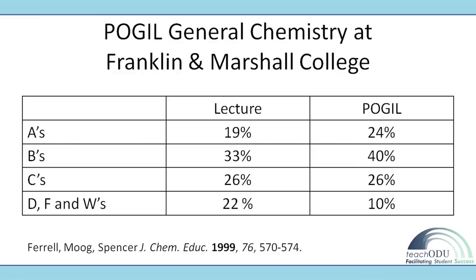With POGIL, students are engaged and learning not only the material but also recognizing when they're confused. They don't like being confused, so they work to understand the material. It's also a signal that your worksheet might not be that good if all the students are getting confused.